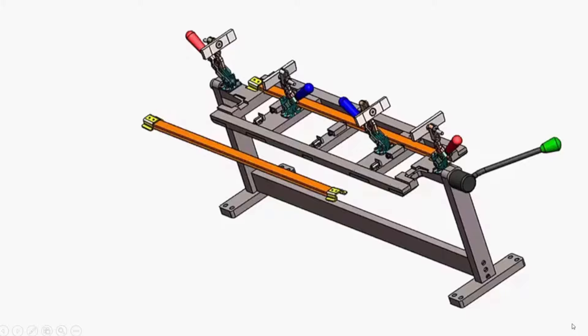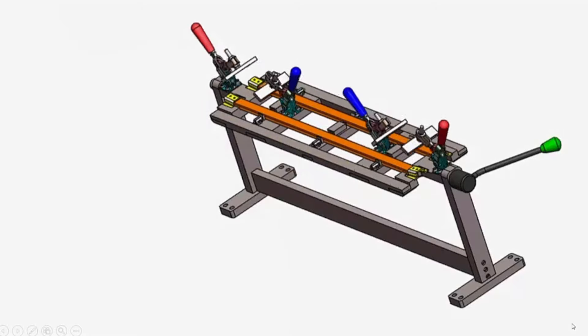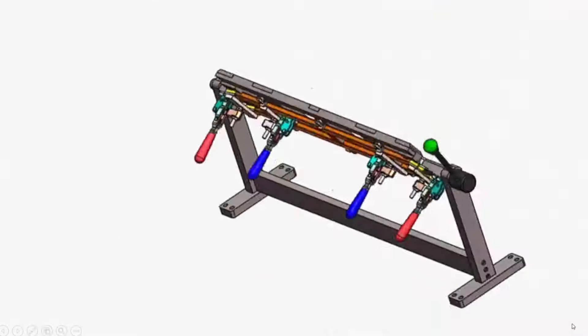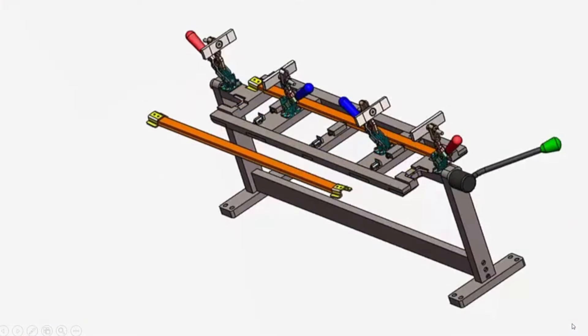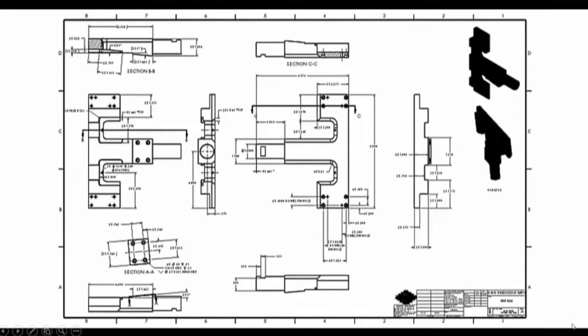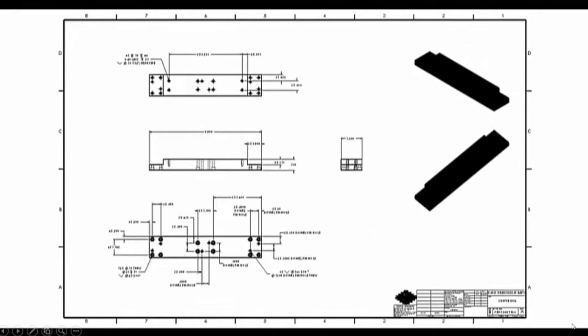In the Jig and Fixture Design course, students design a weld fixture which holds parts in the proper position to be welded. In addition, they create multi-view drawings with all the notes and dimensions required to manufacture.